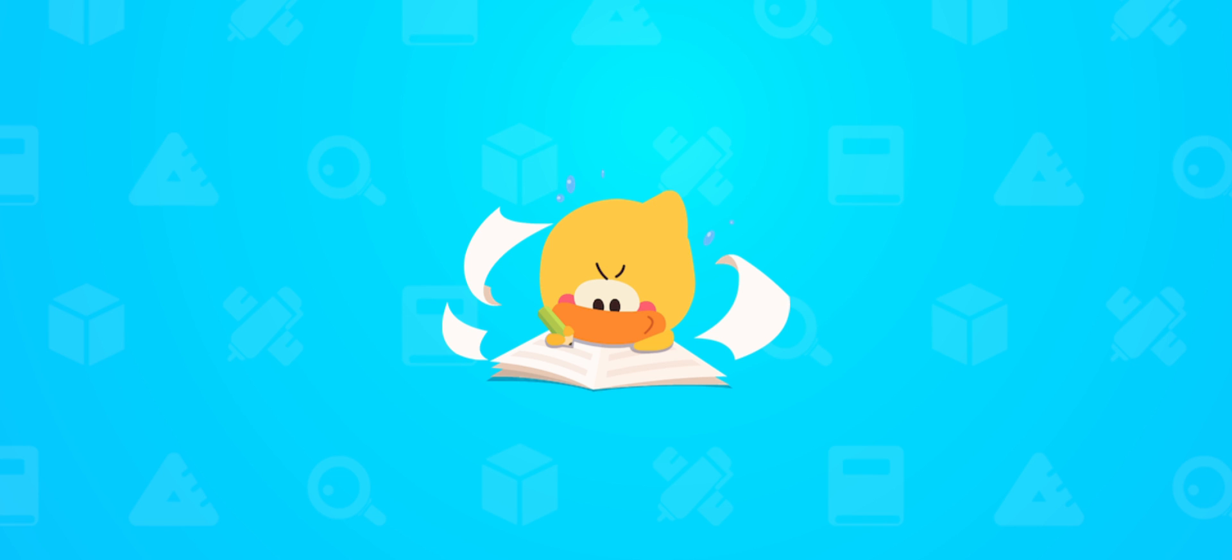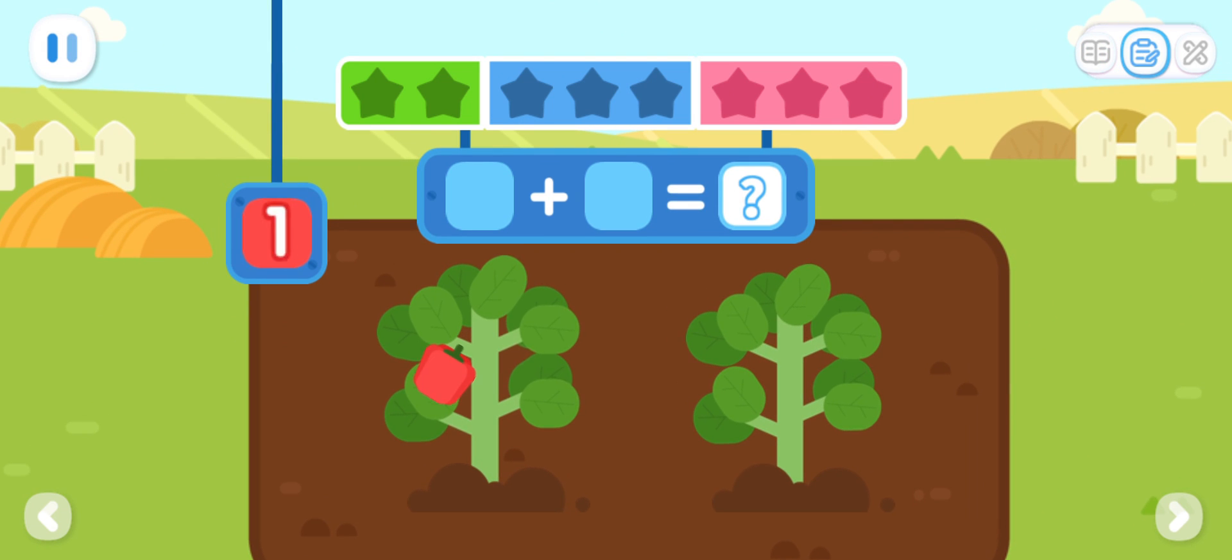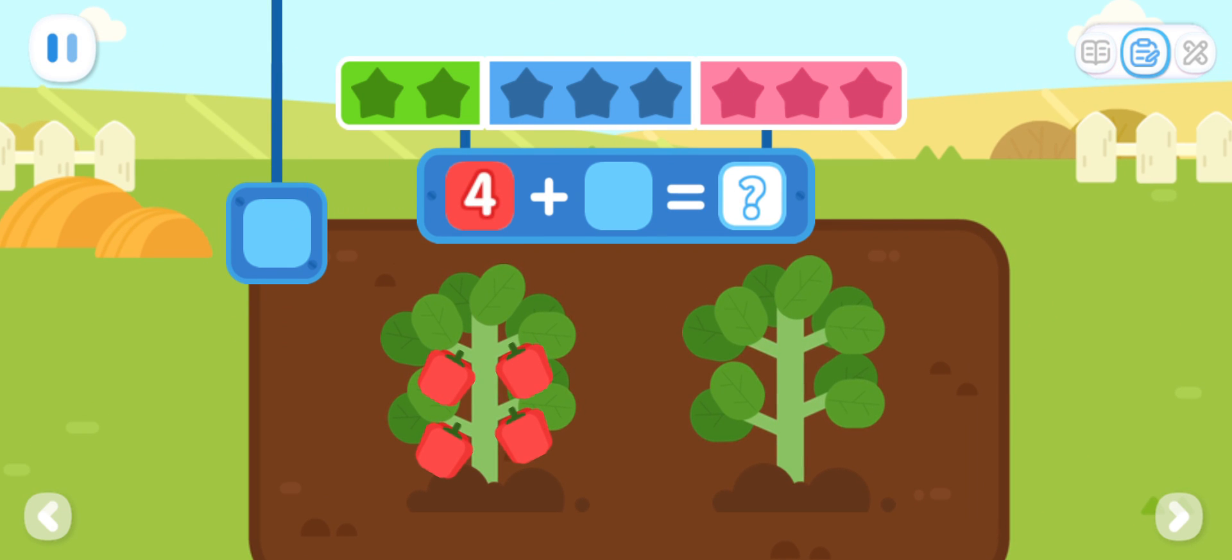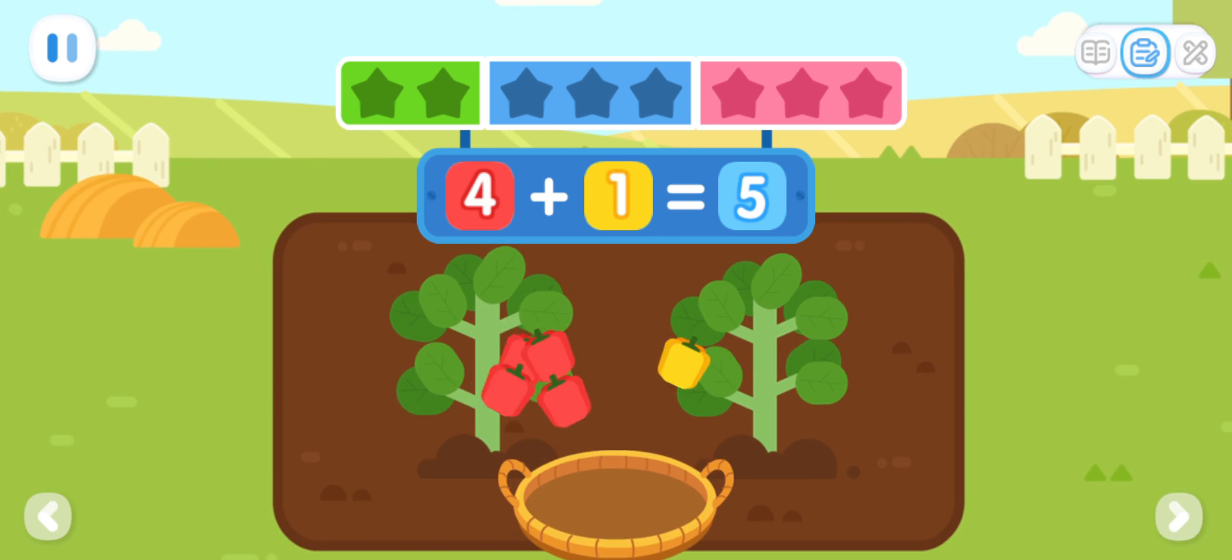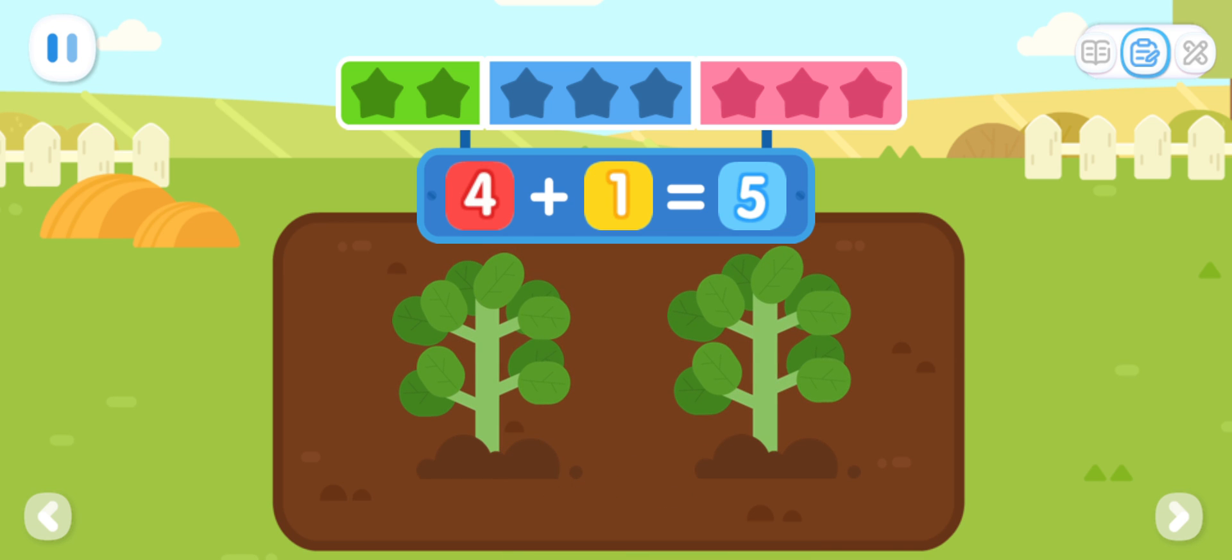Practice with Quacky! There are four red peppers. There is one yellow pepper. How many peppers are there in total? You've got it! Four plus one equals five.